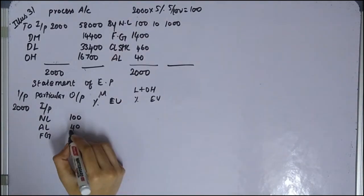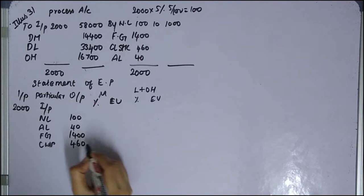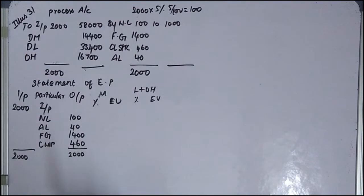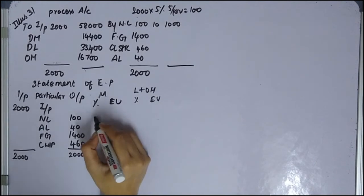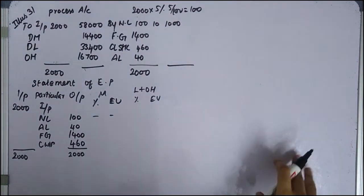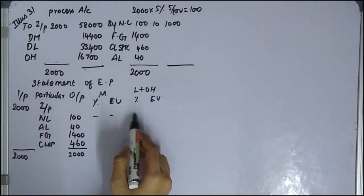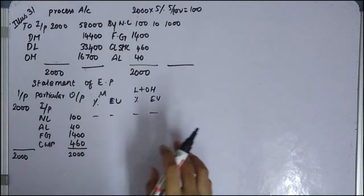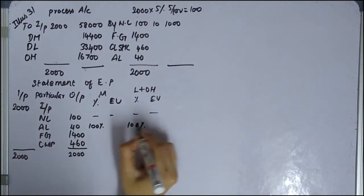Finished goods: 1,400 units. Closing work in progress — closing stock — that is 460 units. For material, it is 100% completion for abnormal loss and normal loss. For labor and overheads, it is 100% completion. Finished goods are also 100% complete.